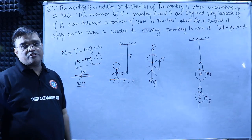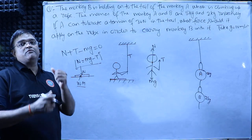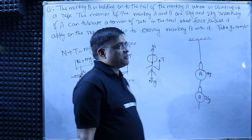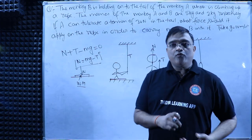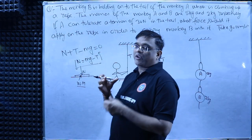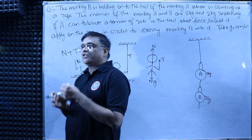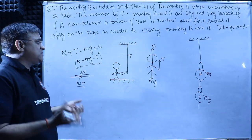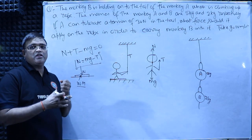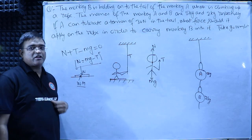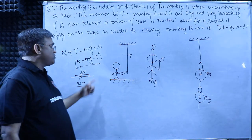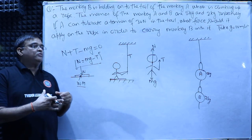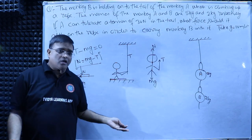You stop interacting with the surface and can move upward with constant velocity. So the minimum force you should apply on the rope to start rope climbing is equal to your weight.